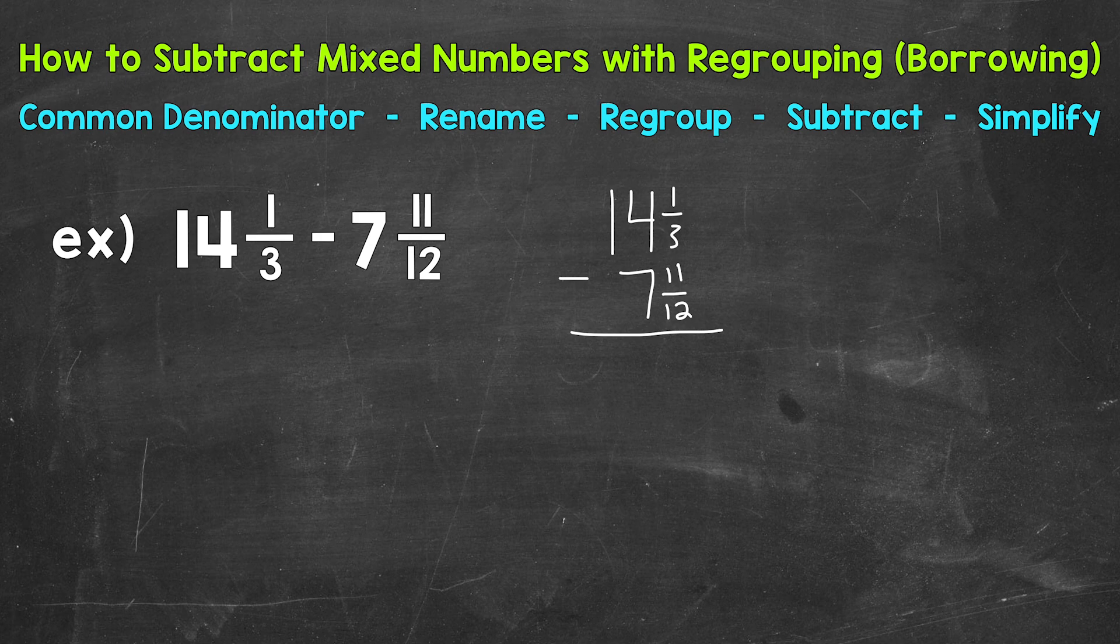Now, in order to find a common denominator, we need to find the least common multiple between 3 and 12, and that's going to give us our least common denominator. You may be able to think about what that least common multiple is without writing out the multiples lists. But I'll come to the side as a refresher and write out some multiples of 3 and 12 in order to find that least common multiple.